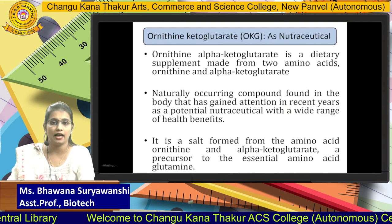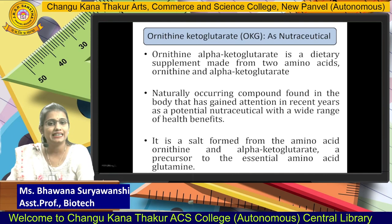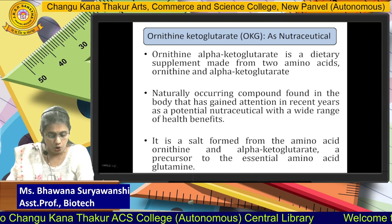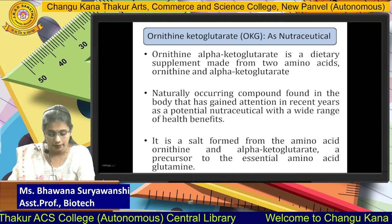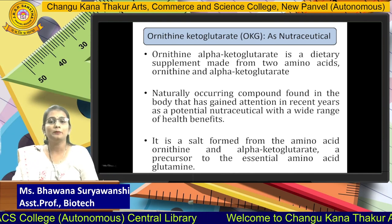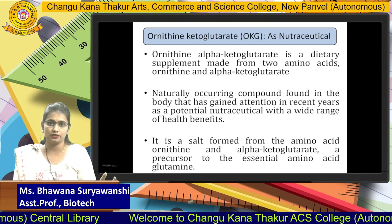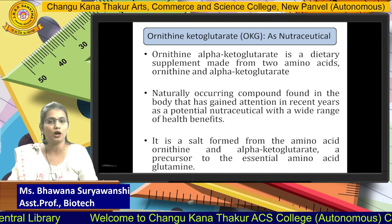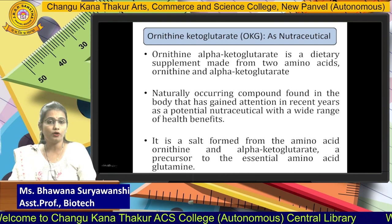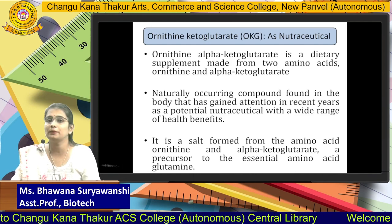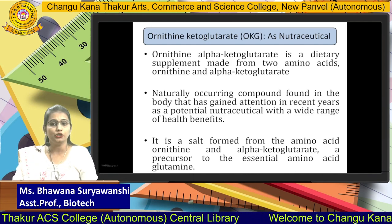Coming to ornithine alpha-ketoglutarate, a nutraceutical — what exactly is OKG? It is abbreviated as OKG. Ornithine alpha-ketoglutarate is a dietary supplement that is made up of two amino acids: ornithine and alpha-ketoglutarate. It is a combination of two amino acids. It is a naturally occurring compound found in the body, and it has gained tremendous attention in recent years as a potential nutraceutical.